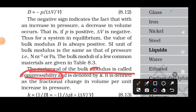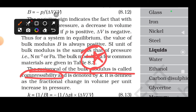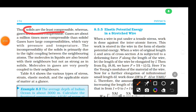Compressibility, denoted K, is the reciprocal of bulk modulus. An important point: solids are the least compressible, whereas gases are the most compressible.